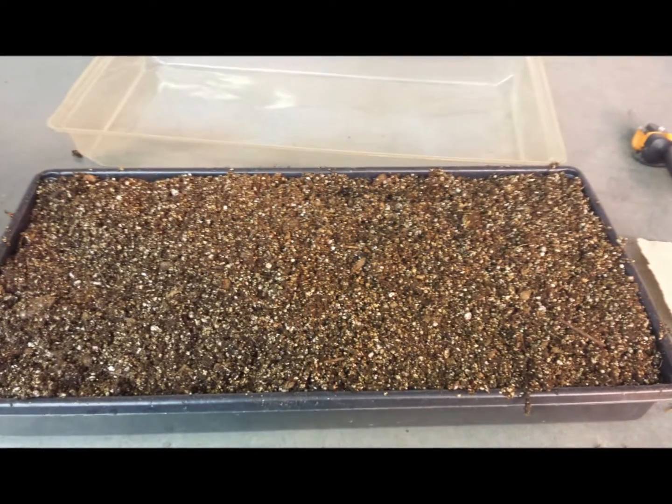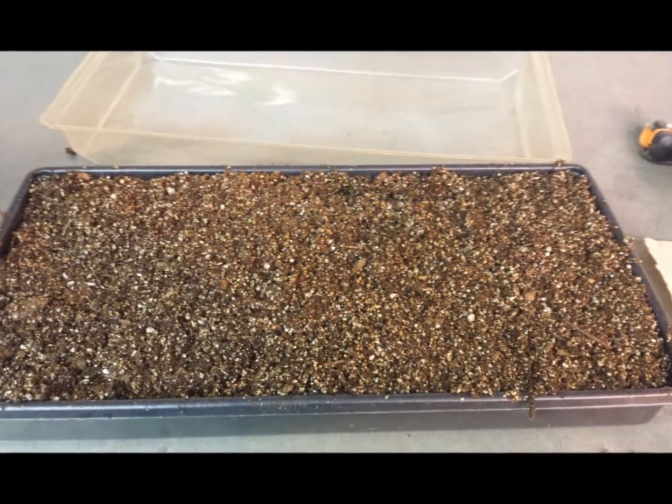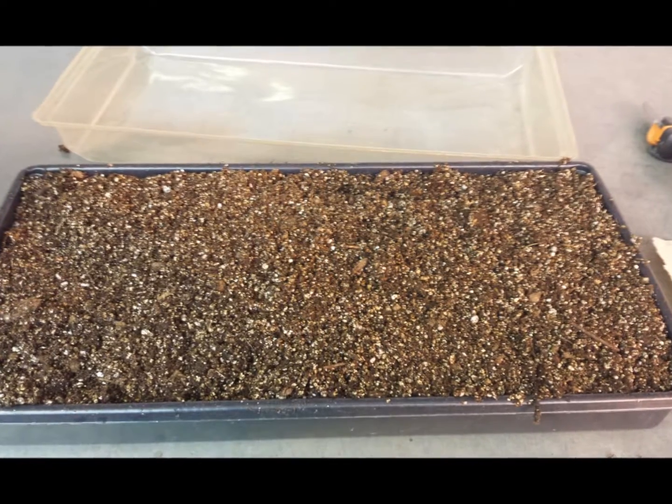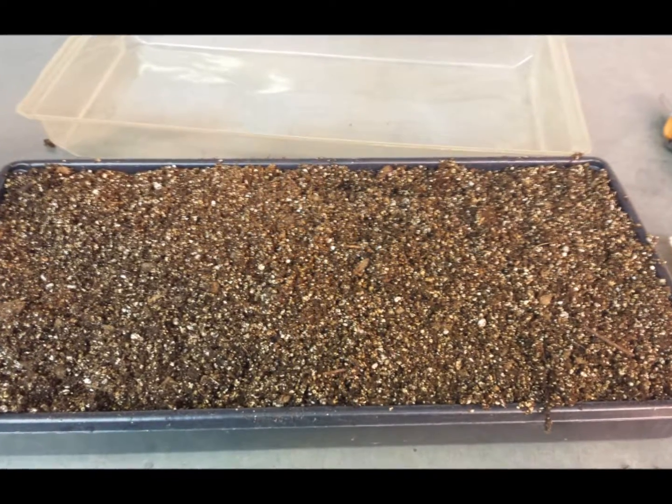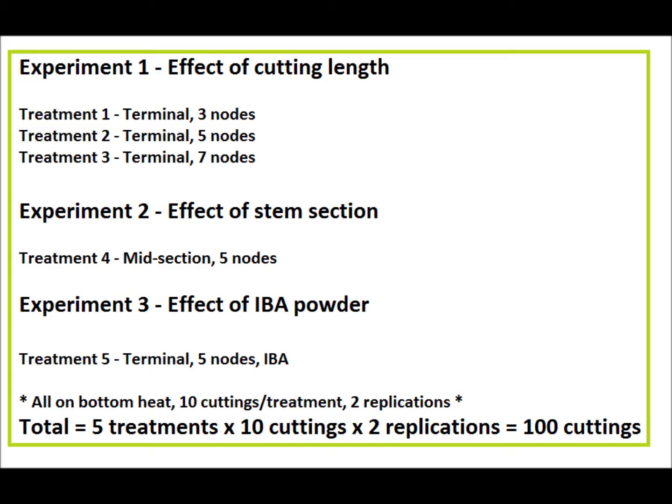I filled the plastic tray with my potting mixture and gently tapped it on the counter to slightly compact it. For this experiment, I wanted to test the effect of the length of the cutting, the section of the stem, and of IBA rooting hormone. For each treatment, I used 10 cuttings and I replicated each of my treatments two times.